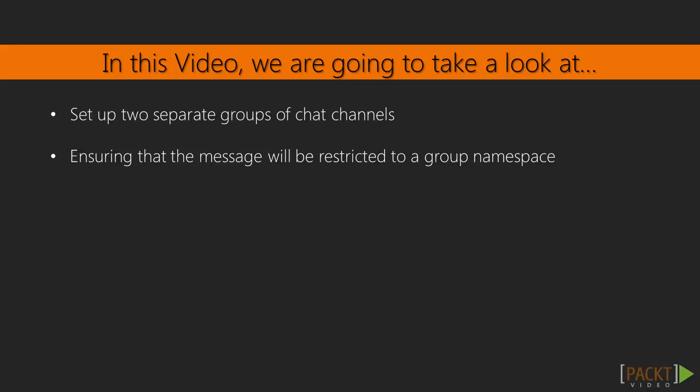Namespaces are a great way to make sure that our Socket.io events are not emitted globally to all the sockets that are connected to the server. We can send messages to a namespace, and only the sockets listening to this namespace will receive the event. Many applications have multiple customers that should never be mixed together, and we typically use different domains in our URLs to keep them separate.